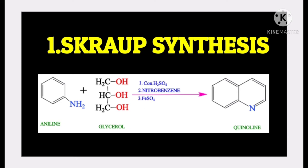In the presence of nitrobenzene, the reaction is violent. To make it a mild reaction, ferrous sulfate is added. In the place of nitrobenzene, we can use arsenic oxide. In the presence of arsenic oxide, this reaction becomes a mild reaction.